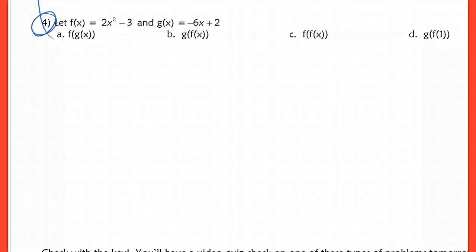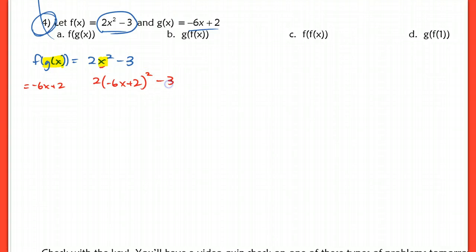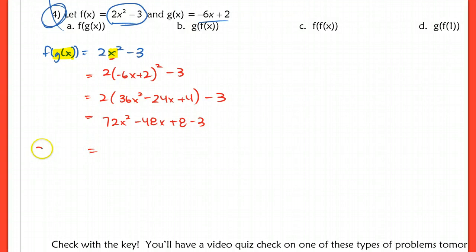On number 4, finding f of g of x when given the two functions: take f, which is 2x squared minus 3, and use g of x as the input for x. Anywhere we see an x in our function, replace it with negative 6x plus 2, because that's what g of x equals. So I have 2 times (negative 6x plus 2) squared minus 3. After FOILing: 2 times (36x squared minus 24x plus 4) minus 3. Distributing: 72x squared minus 48x plus 8 minus 3. So f of g of x equals 72x squared minus 48x plus 5.